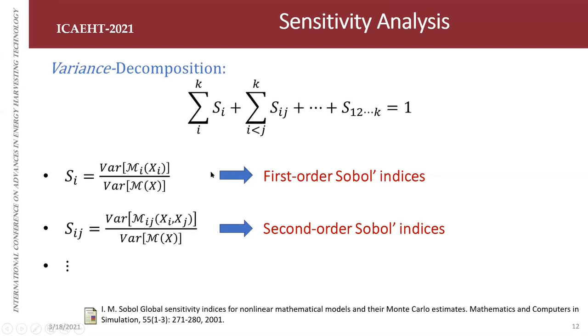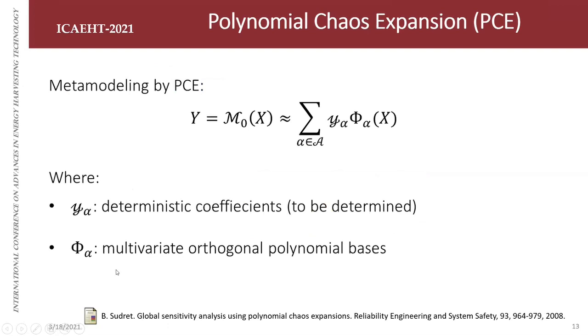The first-order Sobol index quantifies the additive effect of each input separately, with the equation showing the conditional variance for parameter xᵢ in ratio to the total variance. For the second-order Sobol index, which quantifies the interactive effect of inputs xᵢ and xⱼ, the joint effect, the equation is the conditional variance for both parameters in ratio to the total variance. We can use the same reasoning for higher-order Sobol indices.